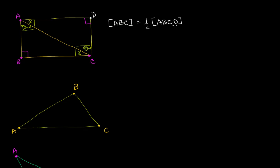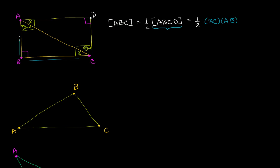We know how to find the area of rectangle ABCD. It's going to be equal to one half times the base, or the width of the rectangle — that's just the length of BC — times the height of the rectangle, which is AB. So this base times this height gives us the area of the entire rectangle, and the area of our right triangle is half of that. It's one half times this base times this height for the area of a right triangle.